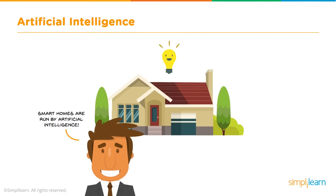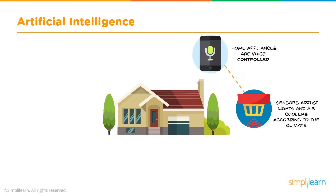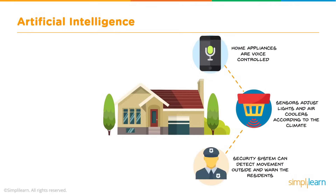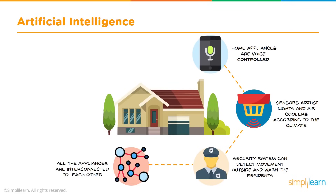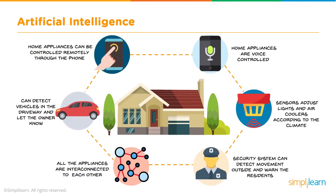Smart homes are run by Artificial Intelligence. Let's have a look at some of the key features of a smart house. Home appliances are voice controlled. Sensors adjust lights and air coolers according to the climate. Security systems can detect movement outside and warn the residents. All the appliances are interconnected and can detect vehicles in the driveway and let the owner know. Home appliances can be controlled remotely through the phone.